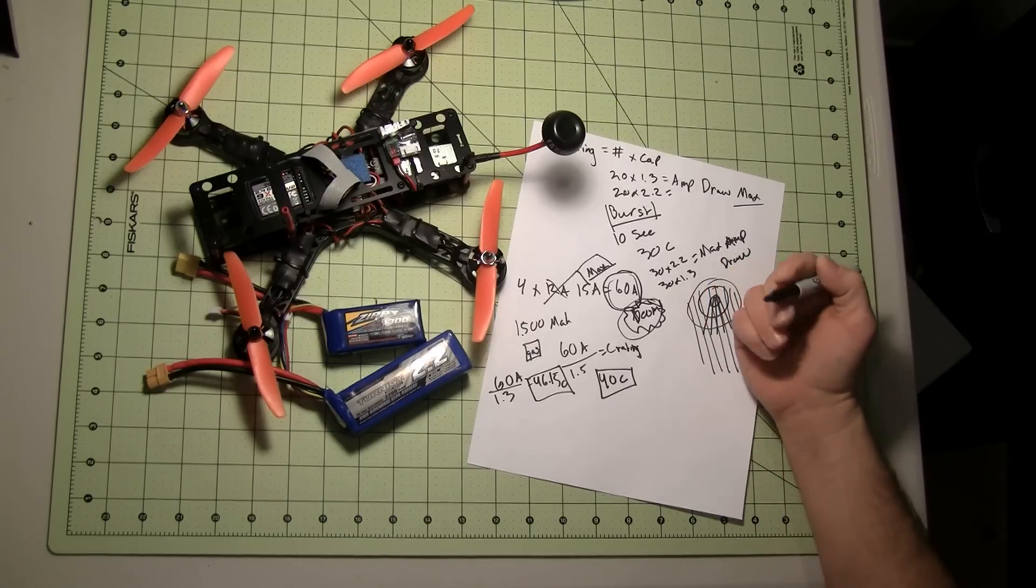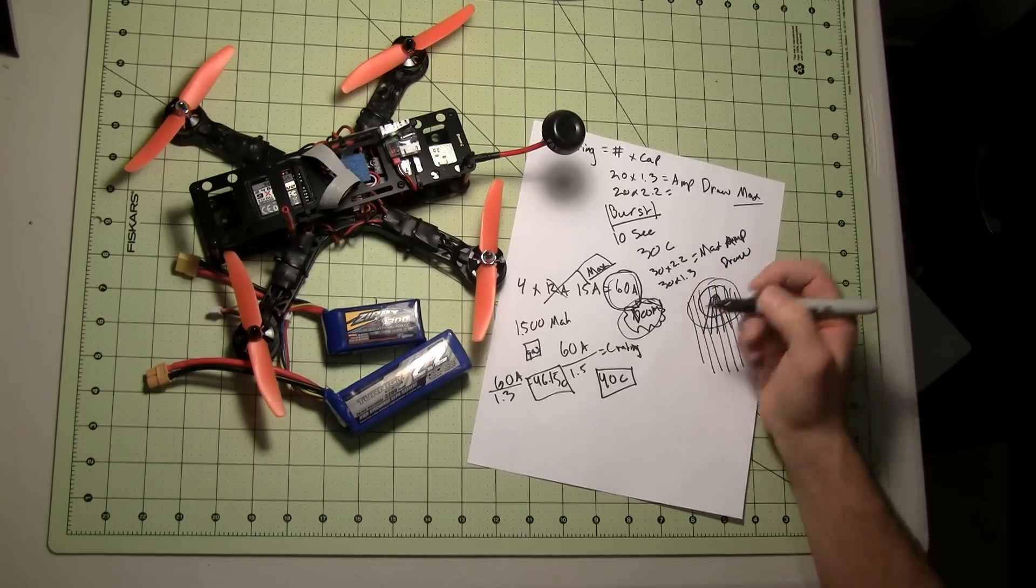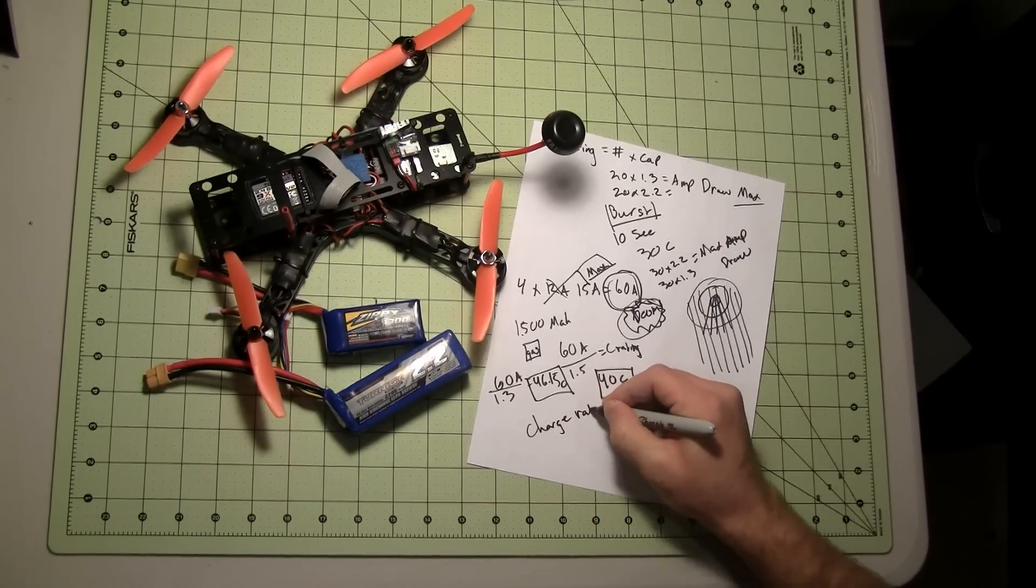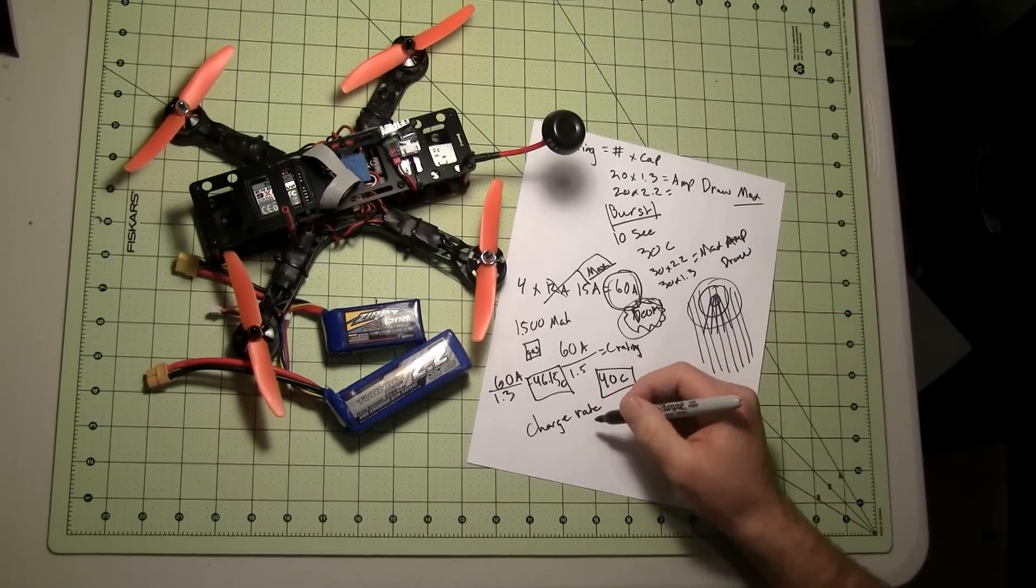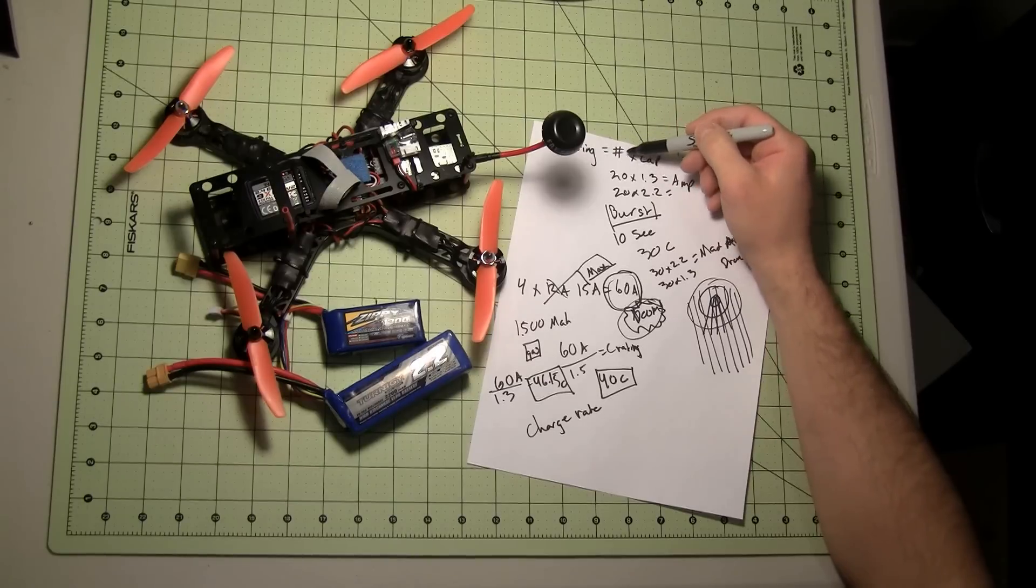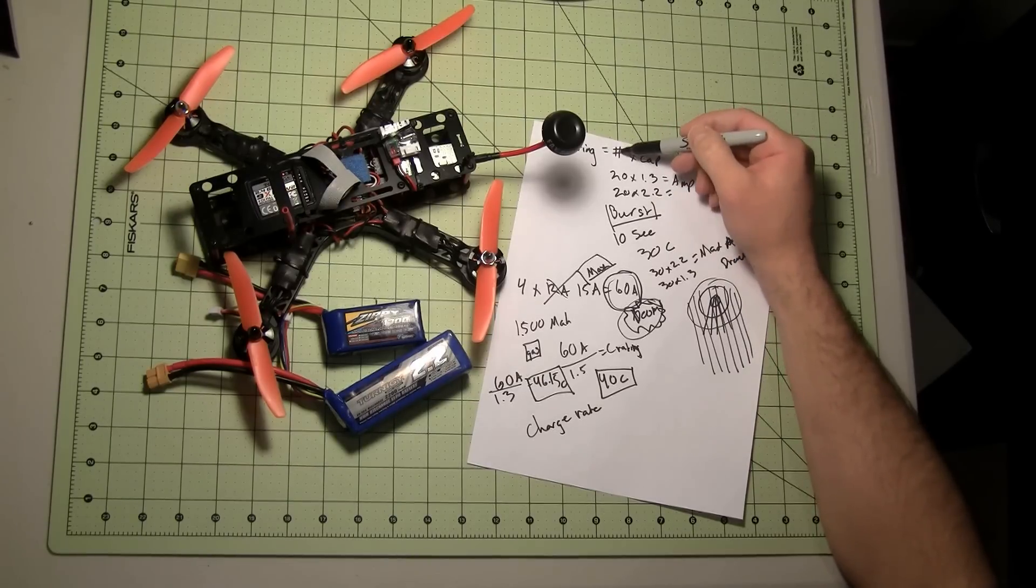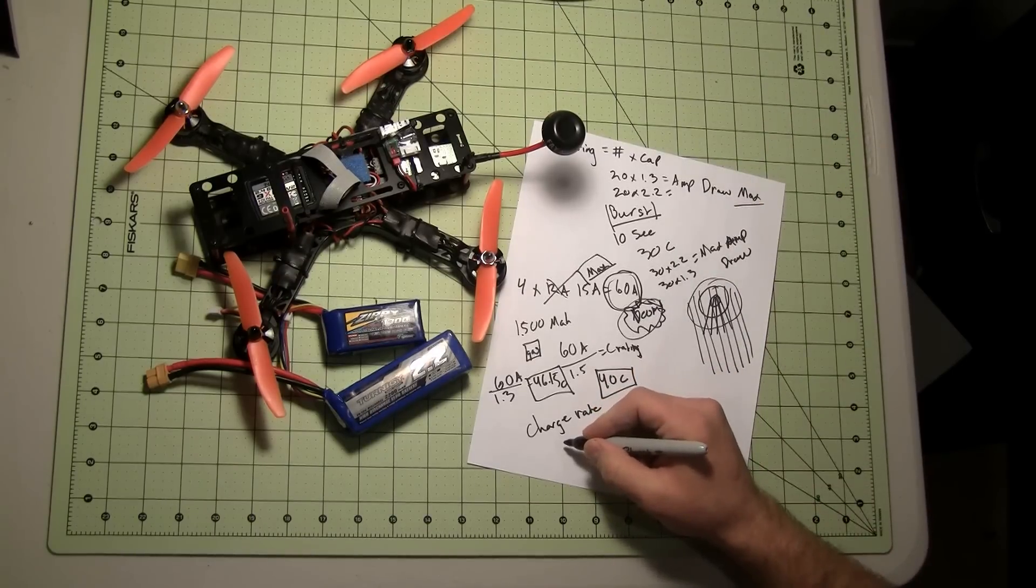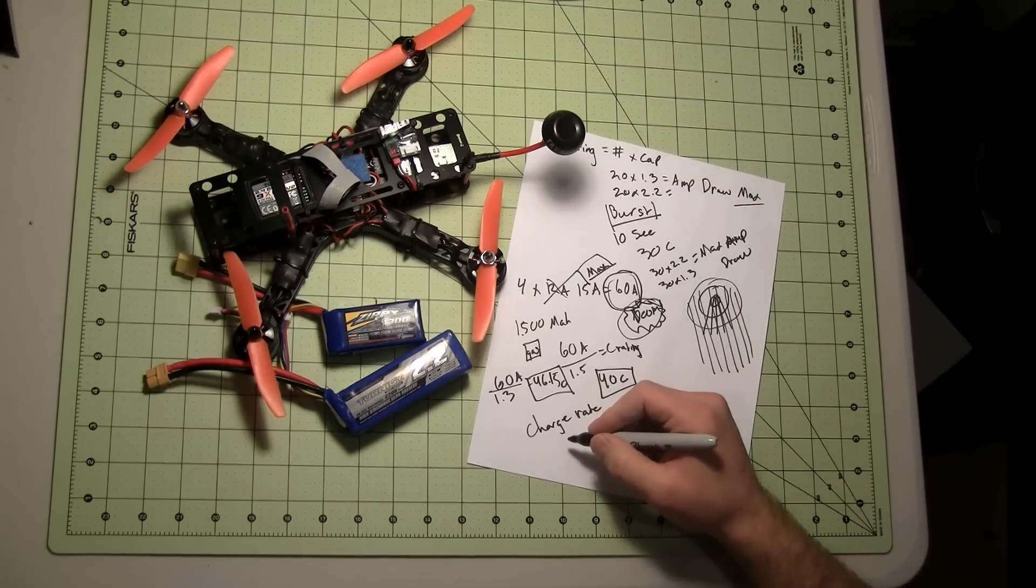A couple other things to consider with batteries is the charge rate. Now, what does that mean? Well, remember we said that the C rating is a number times the capacity. So if something has, a good rule of thumb is to charge everything at a 1C.